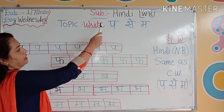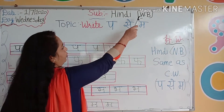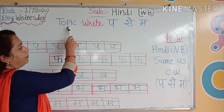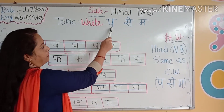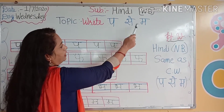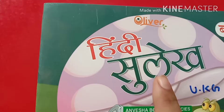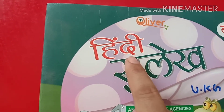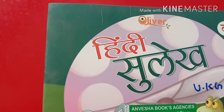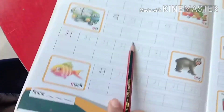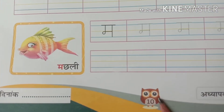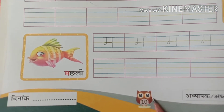Our next subject is Hindi workbook and the topic is write per se ma. Kids, look here — take this book Hindi and open to page number 10.